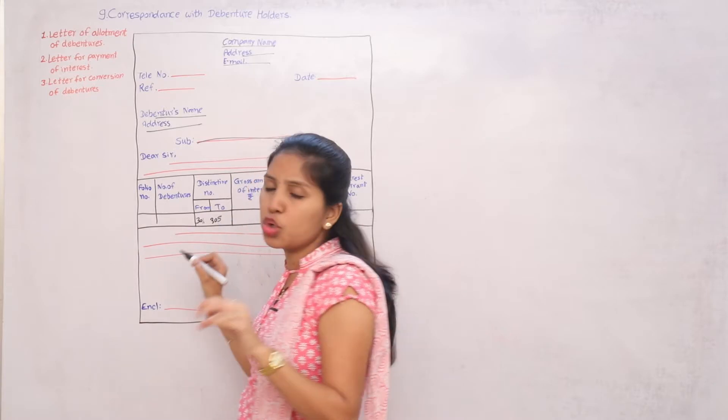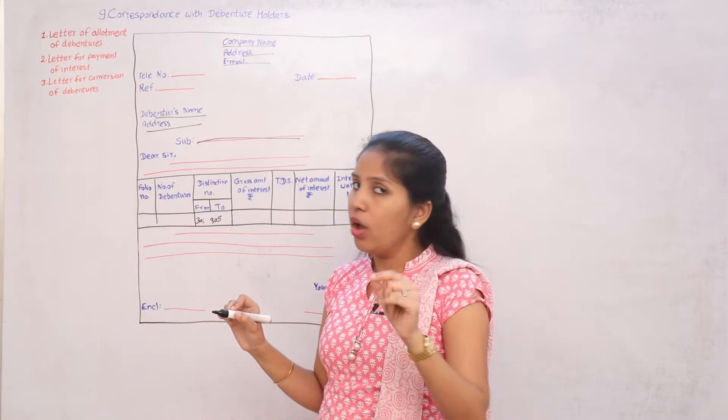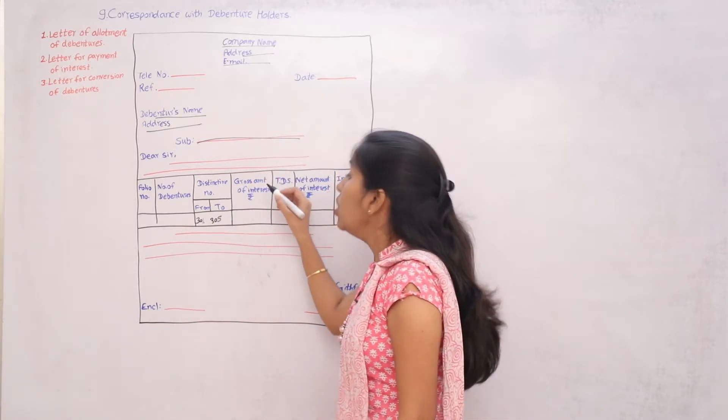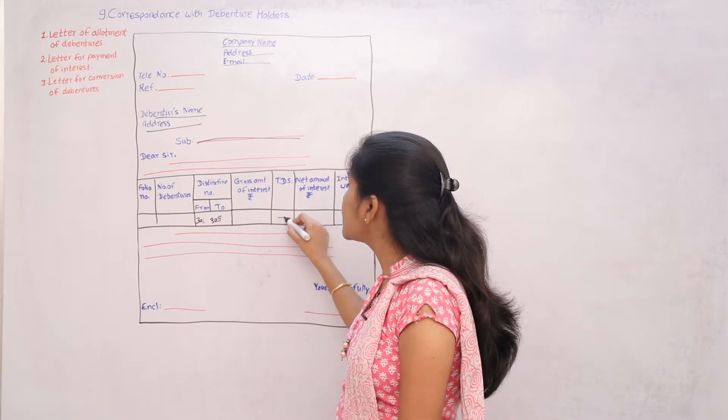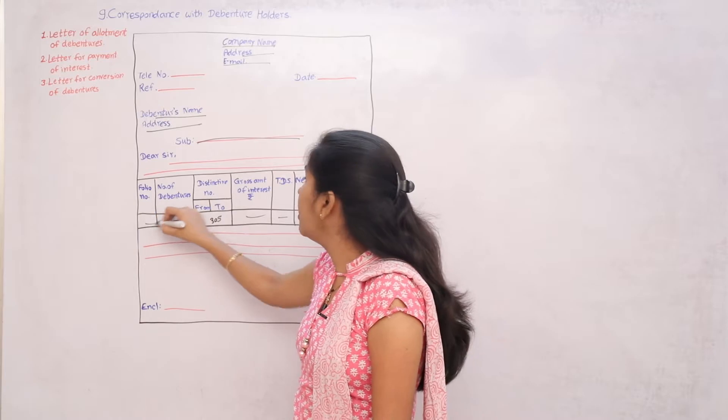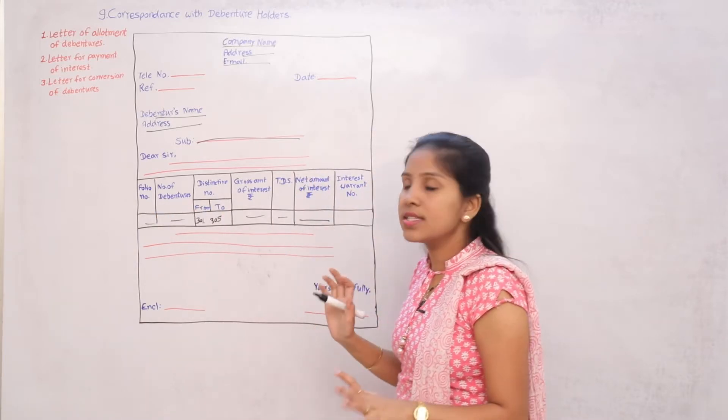From any distinctive number that will be given, we have to put it there. How much is the gross amount of interest? How much TDS to fill up here? How much net amount of interest?